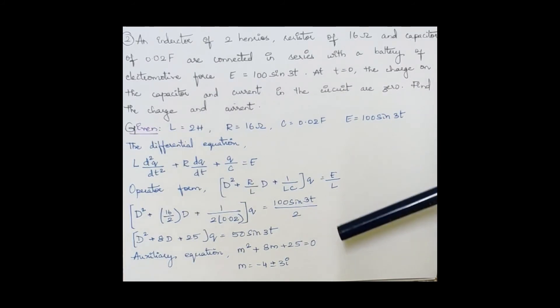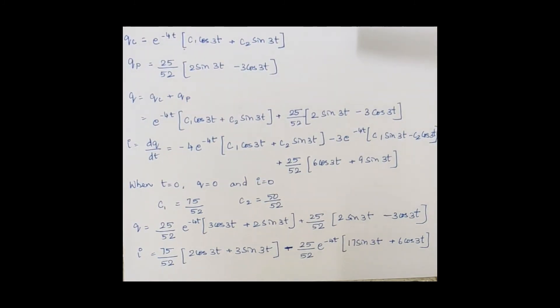And now we try to obtain the auxiliary equation, which becomes m² + 8m + 25 = 0. The roots turn out to be -4 ± 3i, which is again an imaginary root. So we obtain the complementary function, and then as usual we know how we can solve particular integrals.